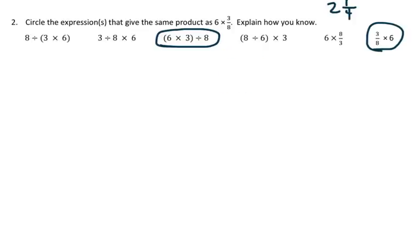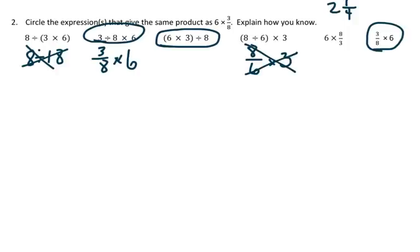If I take a look at these other expressions, 8 divided by 18, no way, that doesn't work out. So I have 3/8 times 6, which would actually work as well, so we can circle that one. I have 8 divided by 6 times 3, so 8/6, that would not work, and then this one would not work either, 6 times 8 divided by 3.